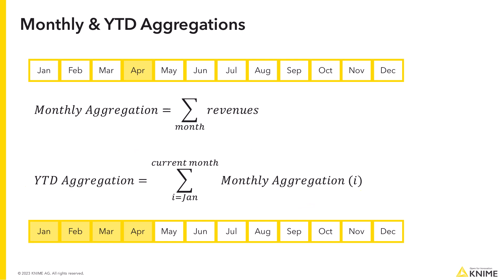For example, if it's April, the monthly aggregation is the sum of all revenues collected in April. The year-to-date aggregation is the sum of the monthly revenues of all months up to April — that means January, February, March, and April.